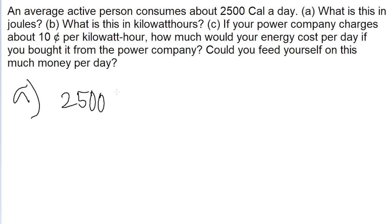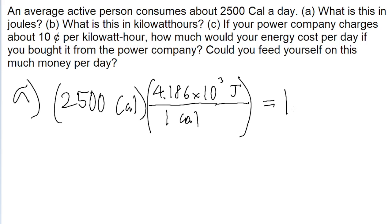So 2,500 calories. You just need to know that for each calorie, for 1 calorie, there are 4.186 times 10 to the power of 3 joules. That is the conversion factor between joules and calories. So we just multiply 2,500 calories by 4.186 times 10 to the power of 3, and we get about 1 times 10 to the power of 7 joules. That is the answer to part A.